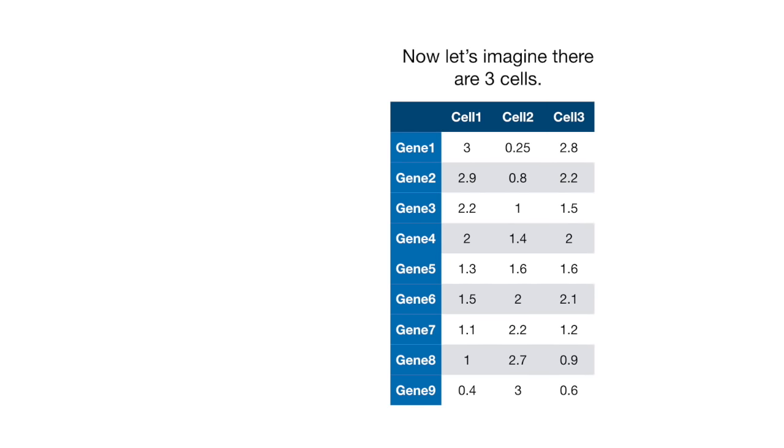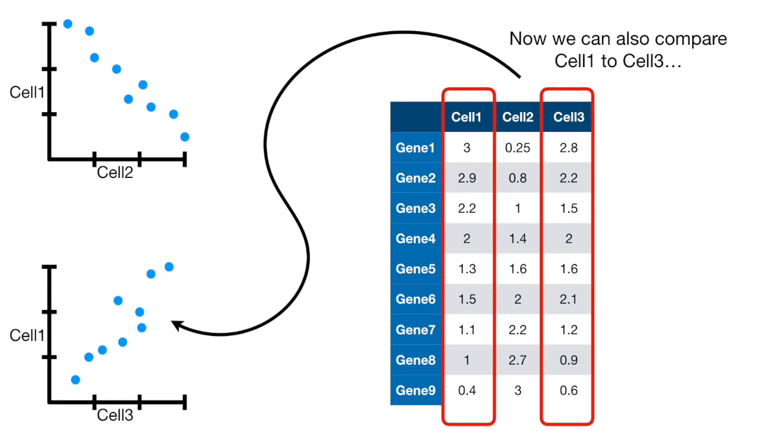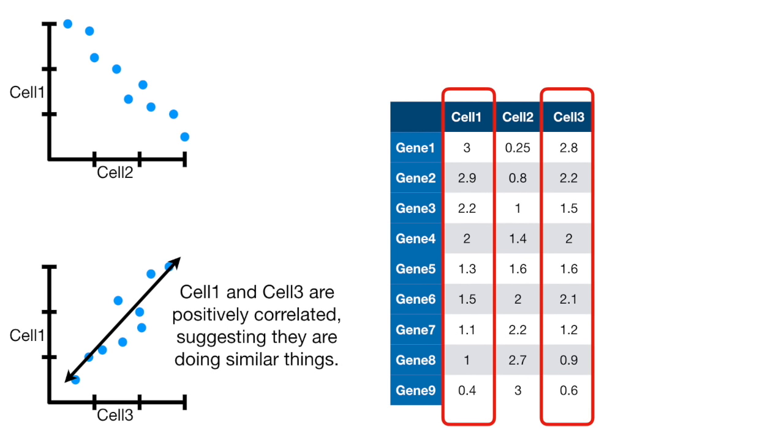Now let's imagine there are three cells. We've already seen how we can plot the first two cells to see how closely they are related. Now we can also compare cell 1 to cell 3. Cell 1 and cell 3 are positively correlated, suggesting they are doing similar things.